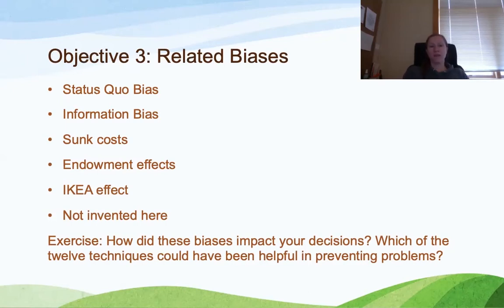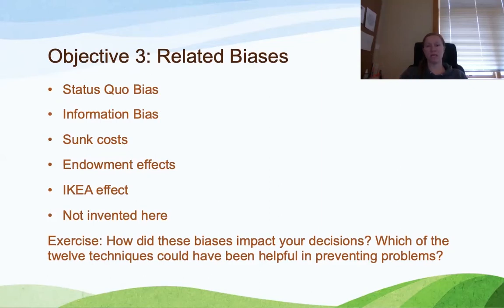The final exercise for this lesson is to think about these biases and how they have impacted your decisions, and then take the next step and identify which of the 12 techniques we talked about to prevent judgment errors could have been helpful in preventing those problems.